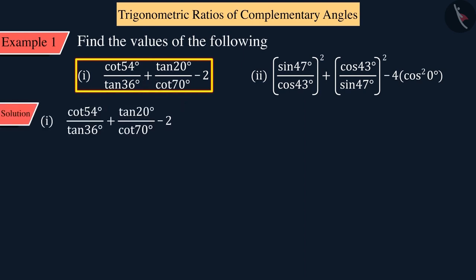We can see that the first term given is cot54° upon tan36°. Here 54 and 36 form a pair of complementary angles. Similarly, the second term also has a pair of complementary angles and the third term is minus 2.